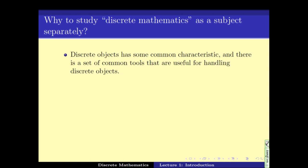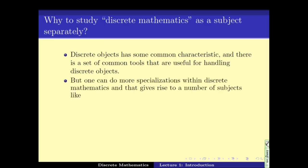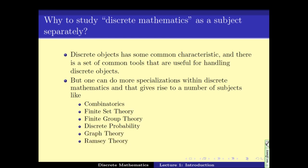So in this subject of discrete mathematics, we study this general set of tools. This general set of tools are very handy. But depending upon some more properties of the discrete objects, the tools can be revised, can be made better. And this gives rise to a number of different subjects, which are much more focused. For example, combinatorics, finite set theory, finite group theory, discrete probability, graph theory, Ramsey theory and the list goes on.